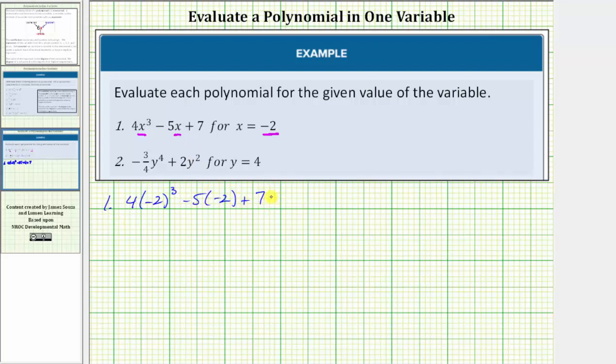Now we simplify using the order of operations. For the next step, we simplify the exponents. Negative two cubed is equal to three factors of negative two, which equals negative eight. So we have four times negative eight minus five times negative two plus seven.